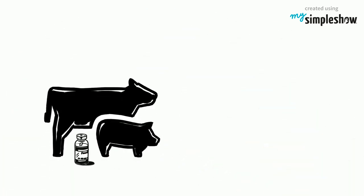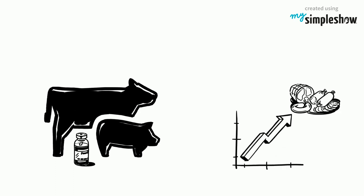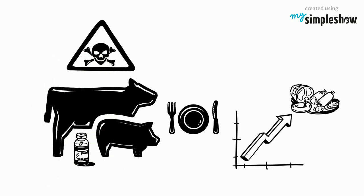Most of the animals we eat are given antibiotics to increase food production. When we eat these animals, we are also taking in the harmful chemicals used to fatten the animals up.